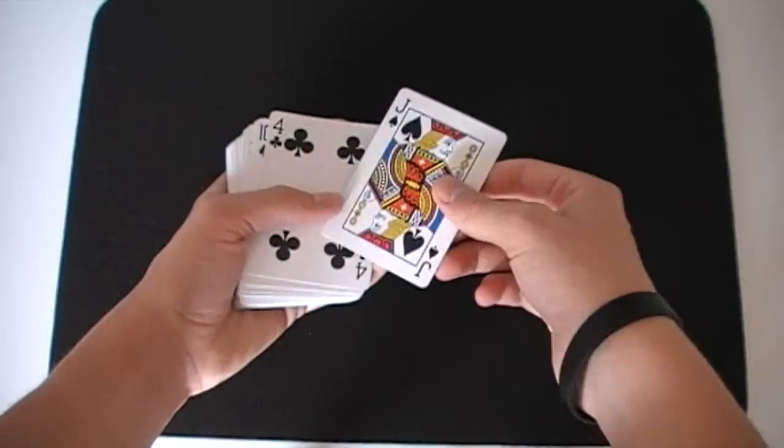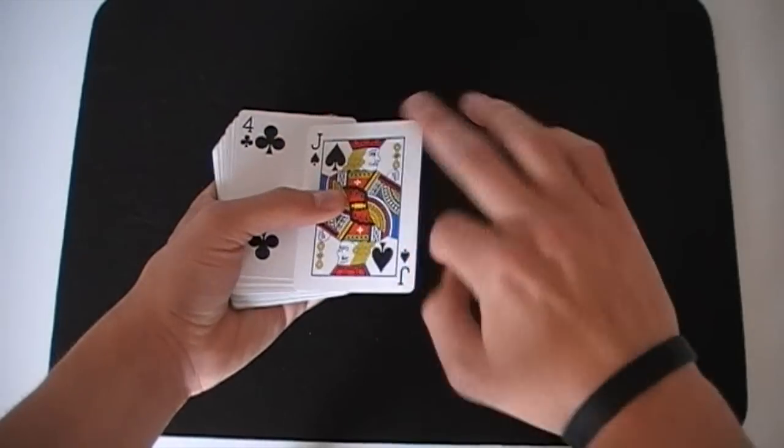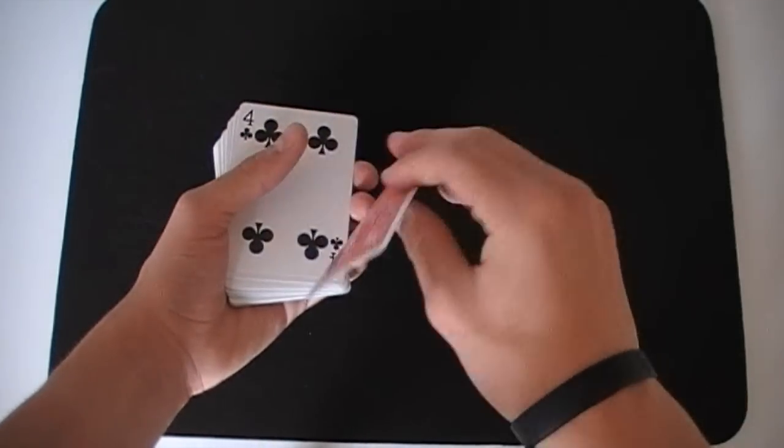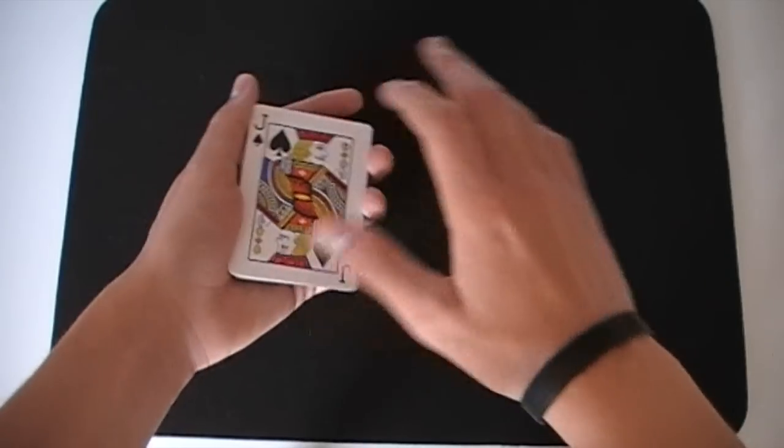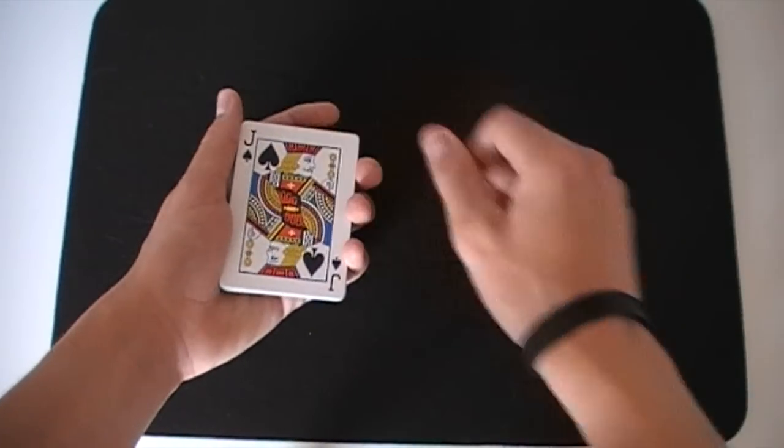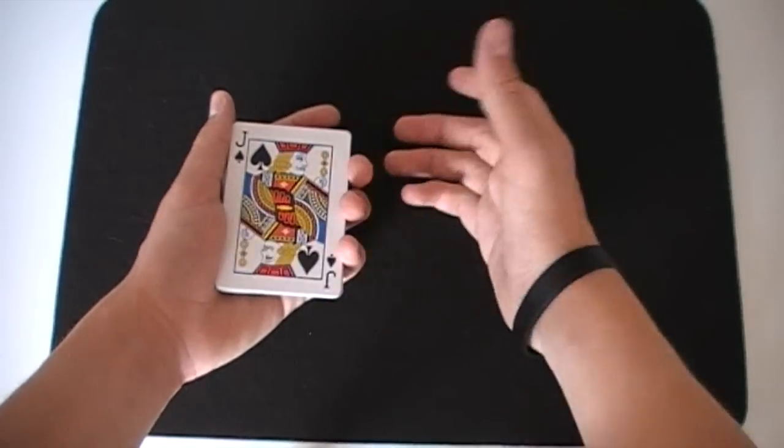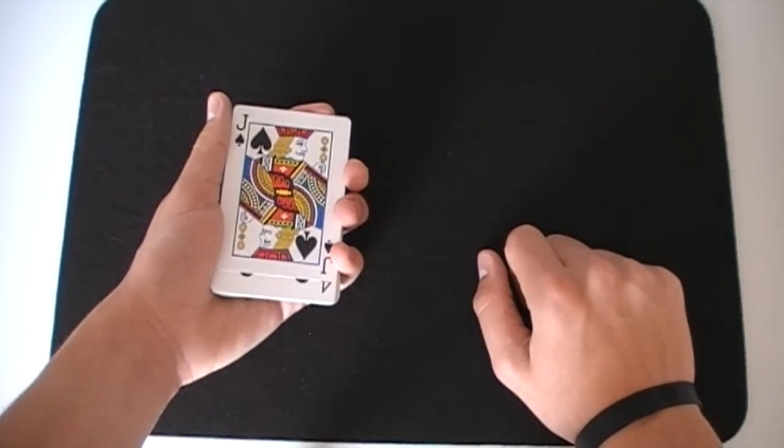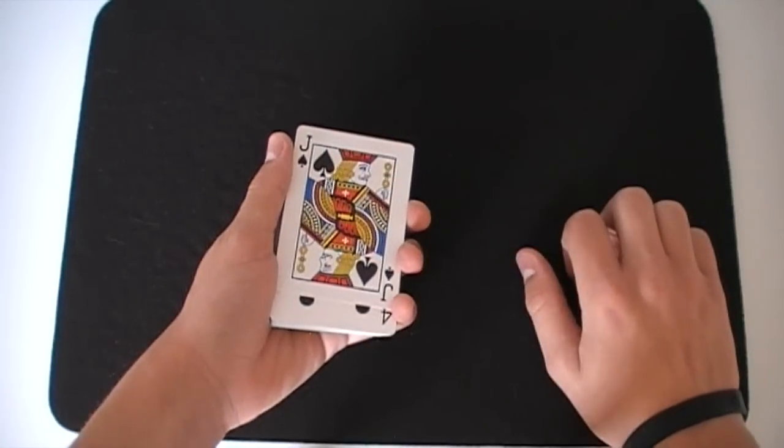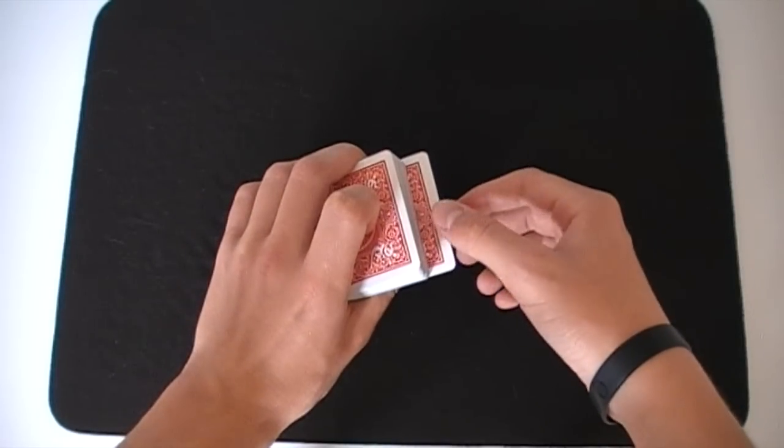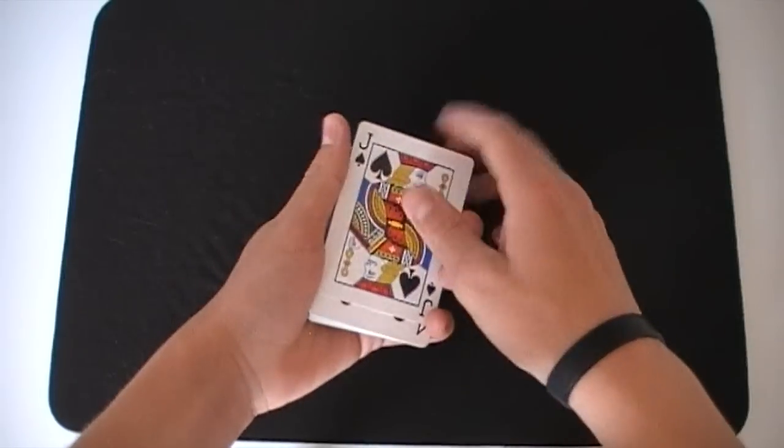So the card that you want to have your card change into—I'm going to have my four of clubs change into my jack of spades—you're going to have the jack of spades on top or whatever card you want it to change into. And then to get into this palm position all you need to do is slide that changing card forward slightly like that, so that's the first step. Once this card is slid forward slightly, maybe about a centimeter or so,